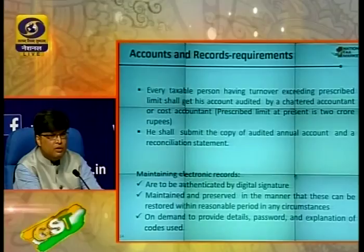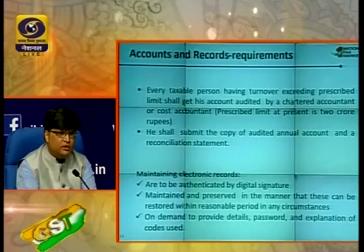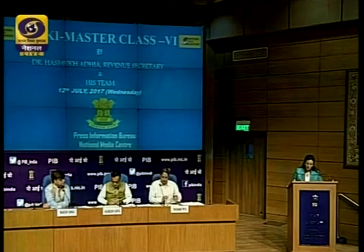Q&A: A person with three units in different states asks if they need to file separate intimations for each unit. The answer is no — if you apply for one unit, it is deemed that you have applied for all. Turnover is calculated as the total of all three units. Composition must be taken for all three; you cannot selectively opt for composition for only one unit.